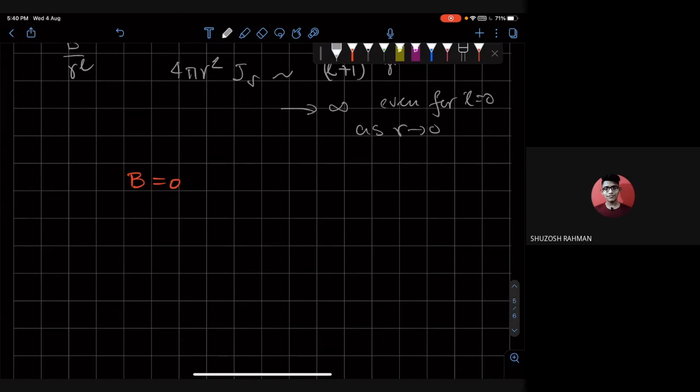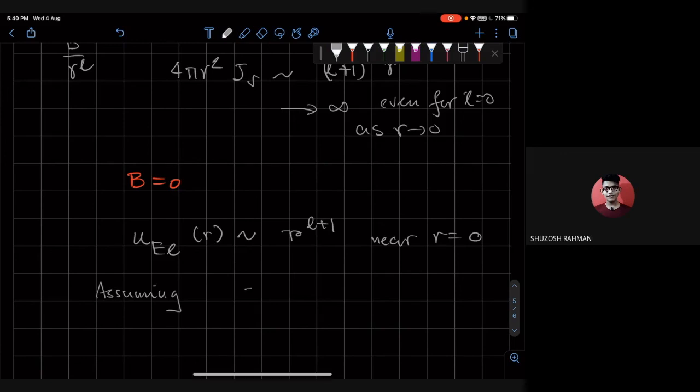So we say that u_el of r has the form of r to the power l plus 1 at the origin. Of course, this is assuming that our potential satisfies this.